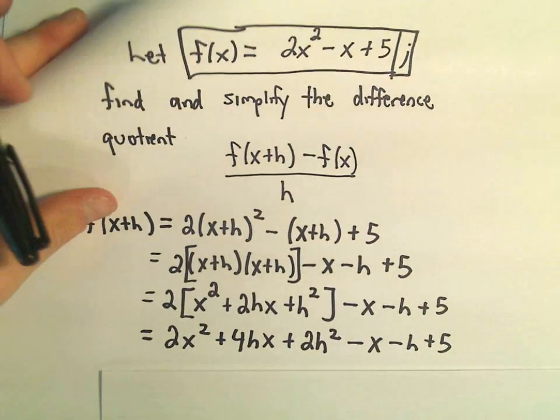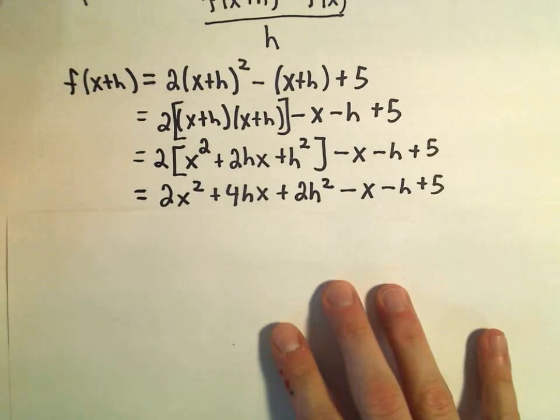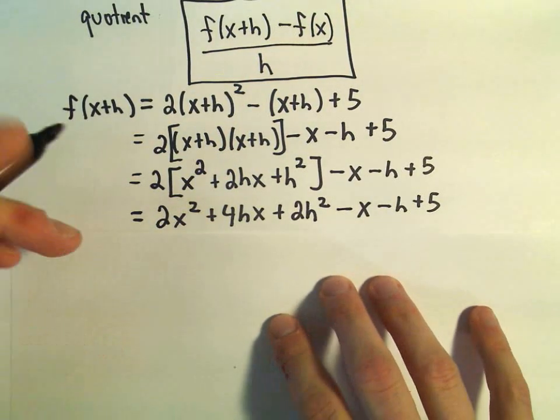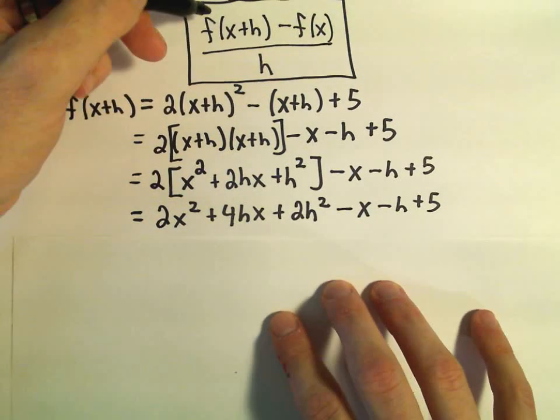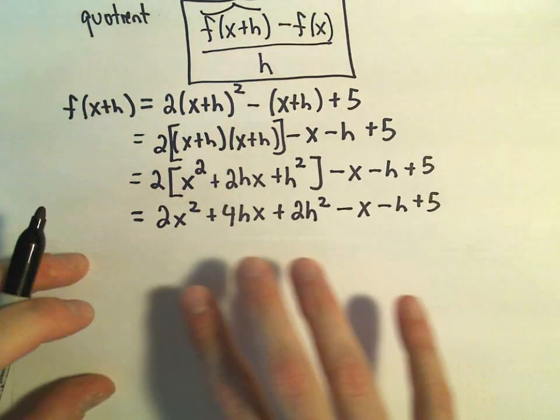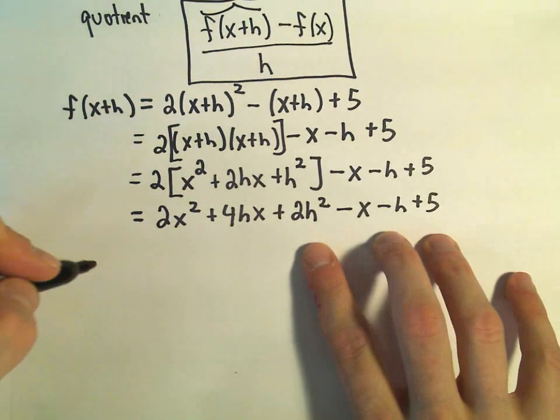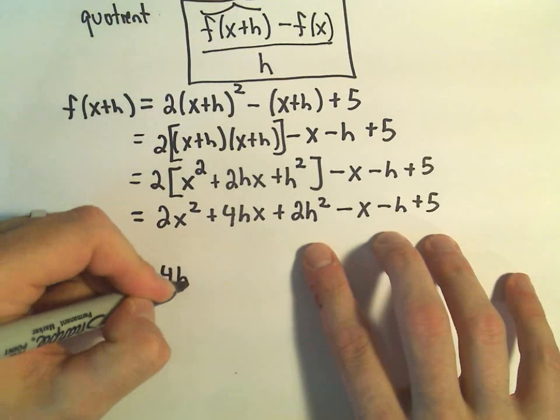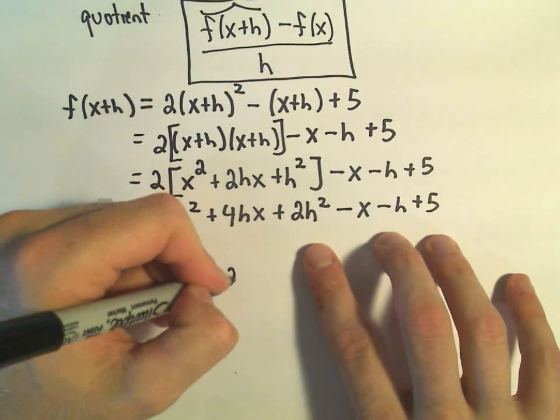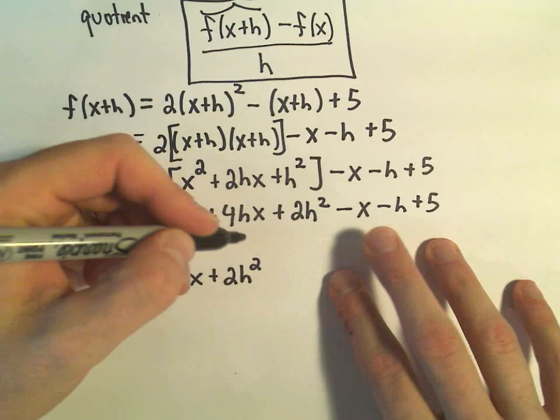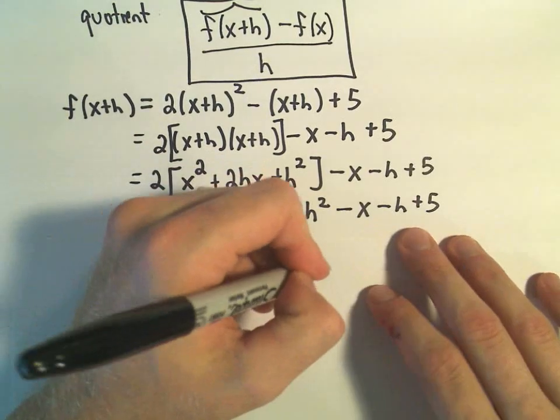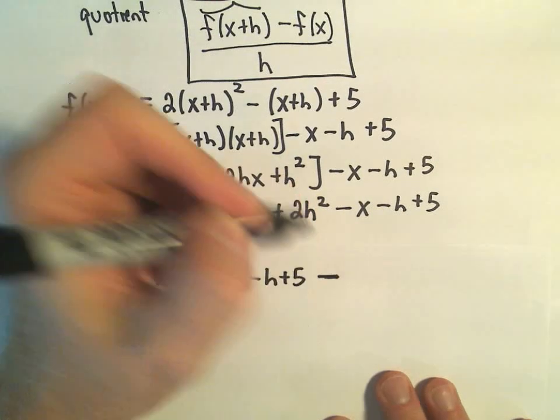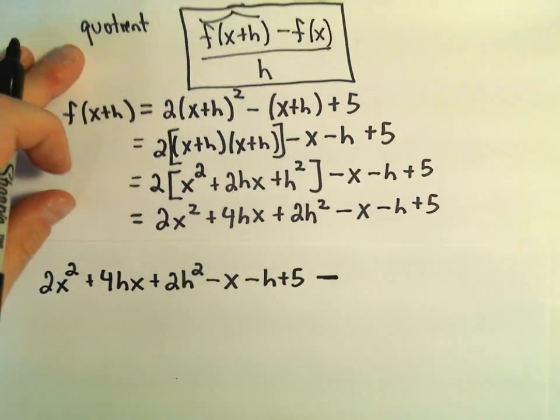Okay, so maybe we can plug everything in here. When we do our difference quotient, f of x plus h minus f of x over h. So we just figured out the value for f of x plus h. It's all this big, long bunch of stuff.